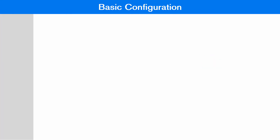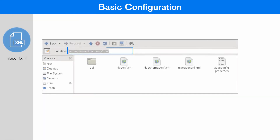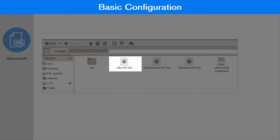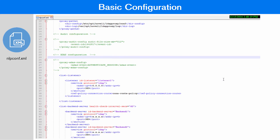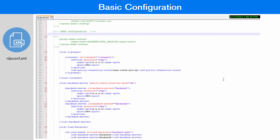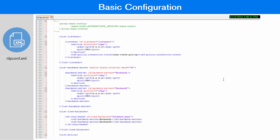The initial configuration for LDAP Proxy consists of installing LDAP Proxy files and NLP manager utility. You can configure the proxy settings for your directory server in the nlpconf.xml. LDAP Proxy bundles a sample nlpconf.xml file with the installation package.